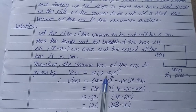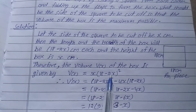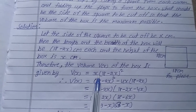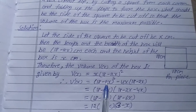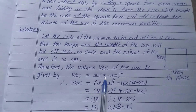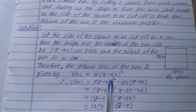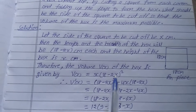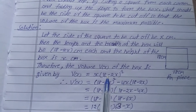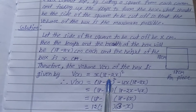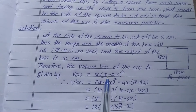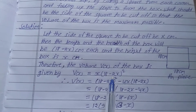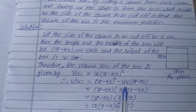Differentiating using the product rule (u times v formula): V'(x) equals the derivative of x, which is 1, times (18 minus 2x) squared, plus x times the derivative of (18 minus 2x) squared. The derivative of (18 minus 2x) squared is 2 times (18 minus 2x) times the derivative of the inside bracket.